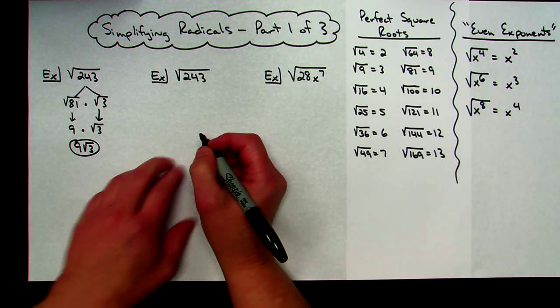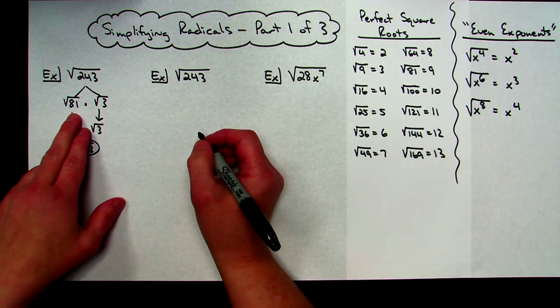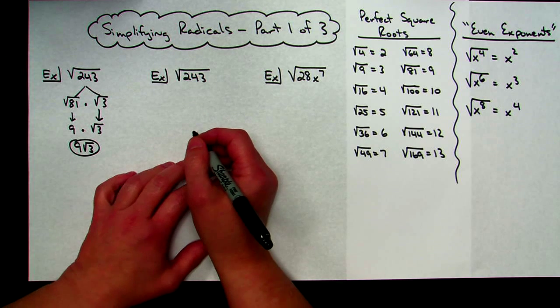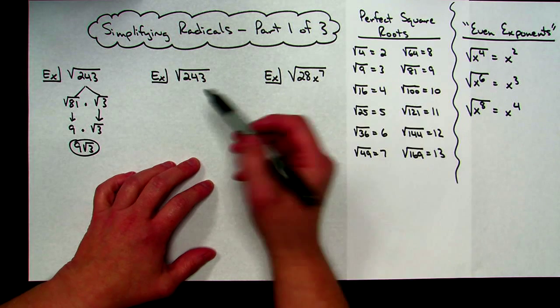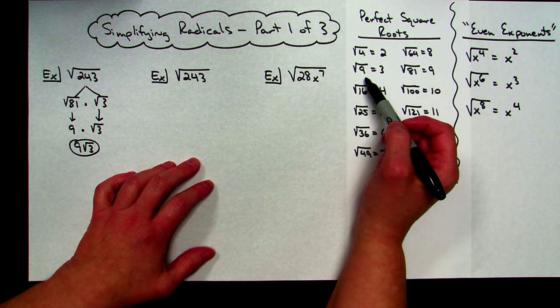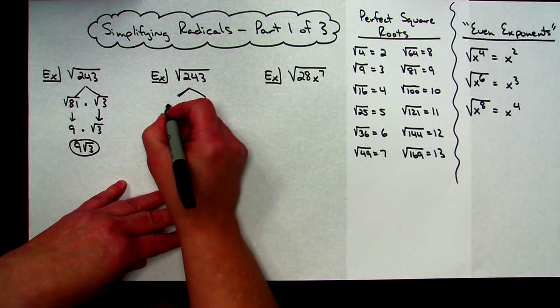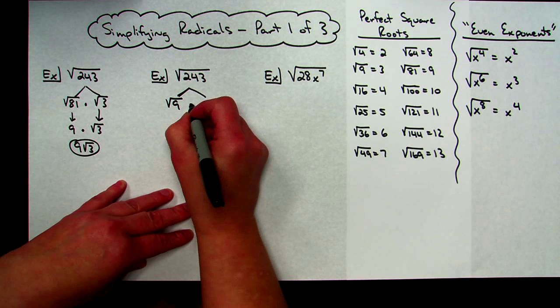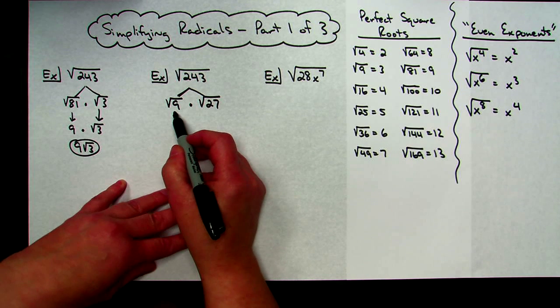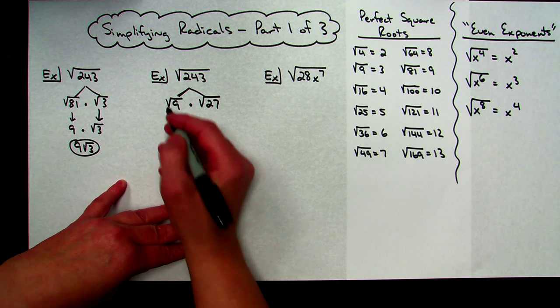Now, I did 243 again here because I want to show you if you would not have gotten that it was 81 times 3, you would not have chosen the biggest perfect square root over there. Maybe as soon as you start doing it, you went 243 divided by 4. Well, that doesn't go into it. 243 divided by 9, it does divide out evenly. 9 times 27 is 243. So if you would have chosen that one, you can still do the problem. It's just a little longer process.